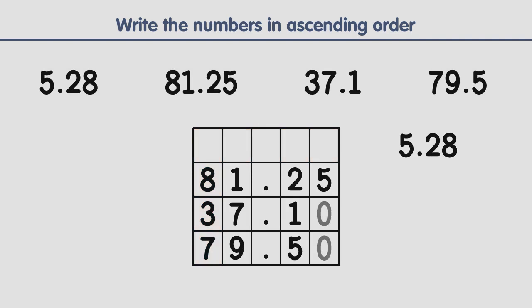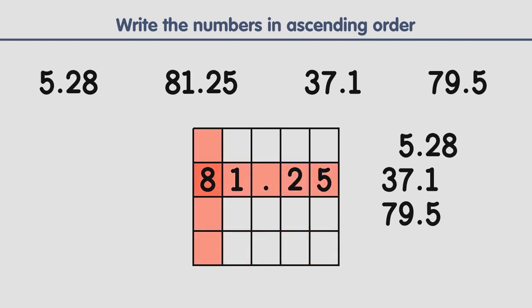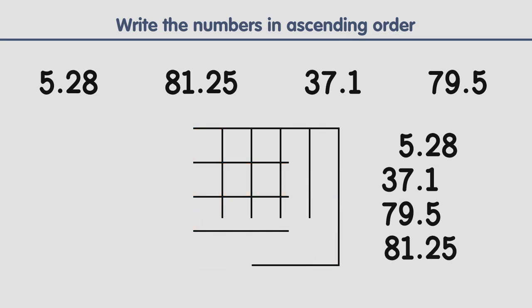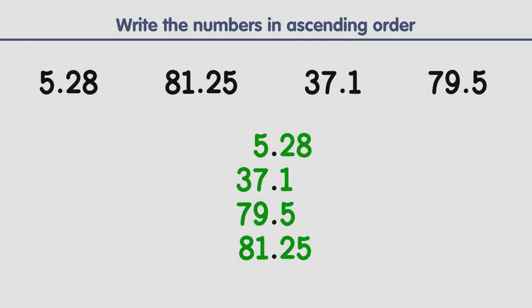We do the same with the remaining numbers. The smallest digit in the first column is 3, so this is the next number in order. Between 8 and 7, 7 is smaller, so this is the next number in order. The last number left is the largest number. And this is how we order decimal numbers in ascending order, from lowest to highest.